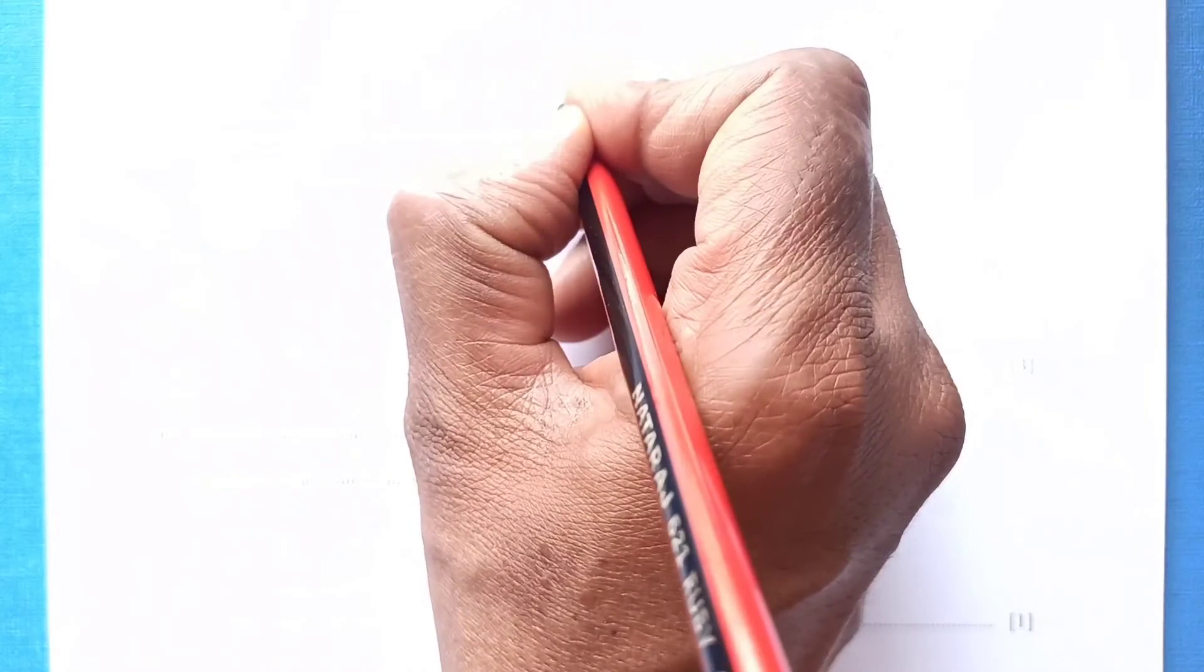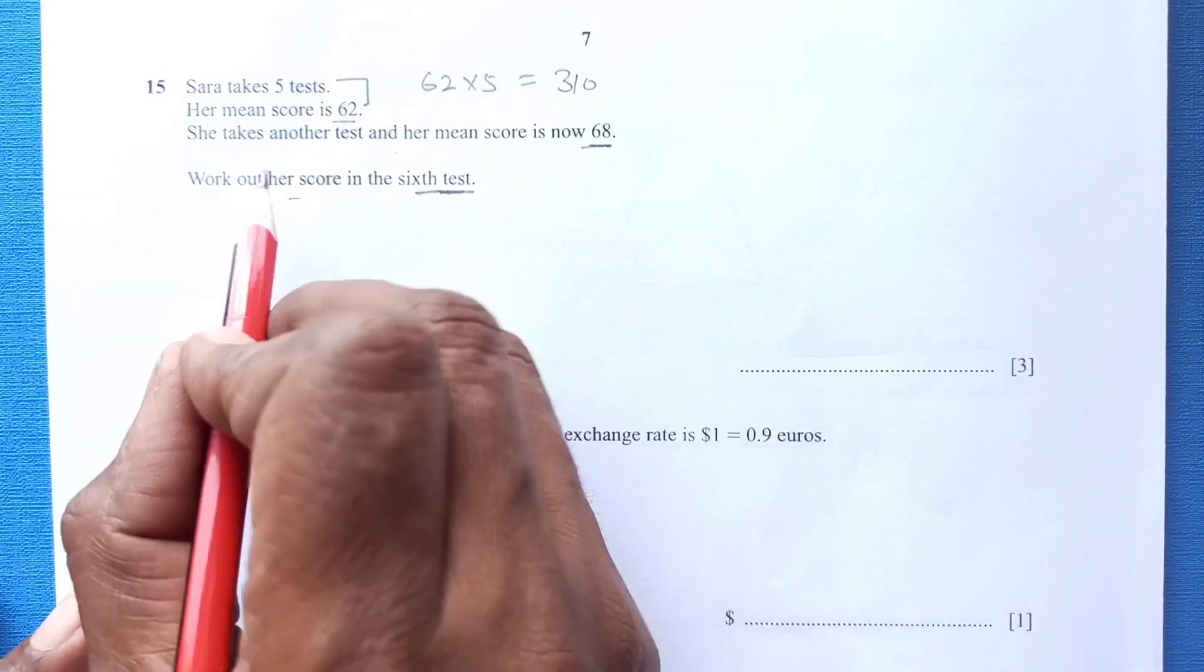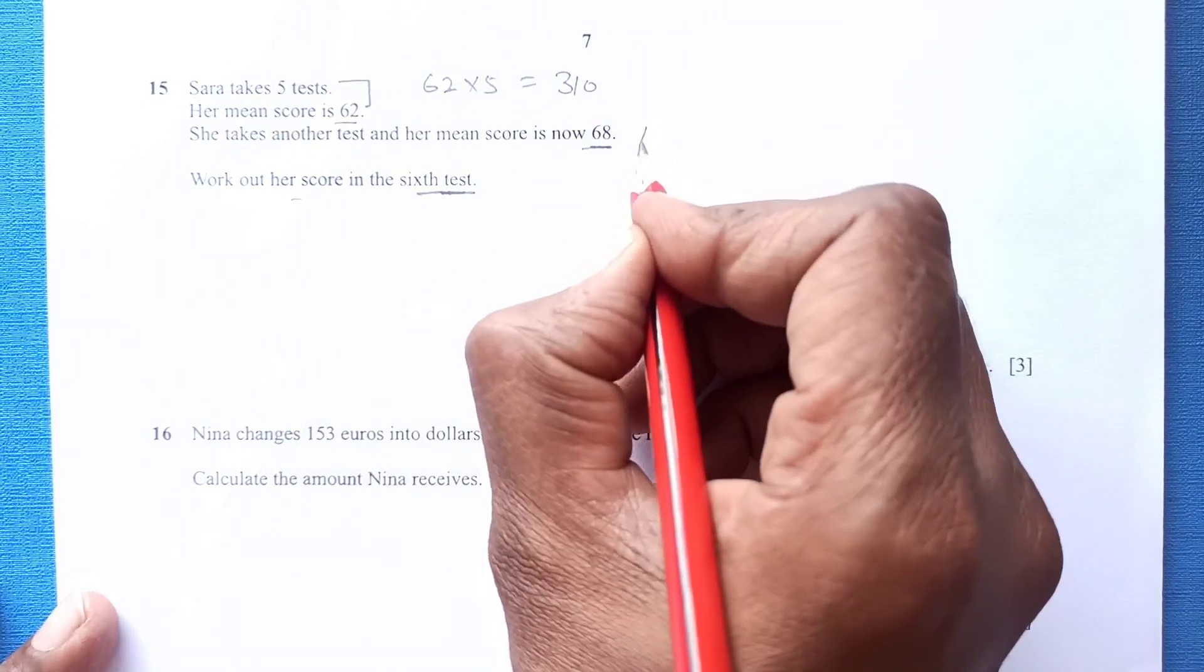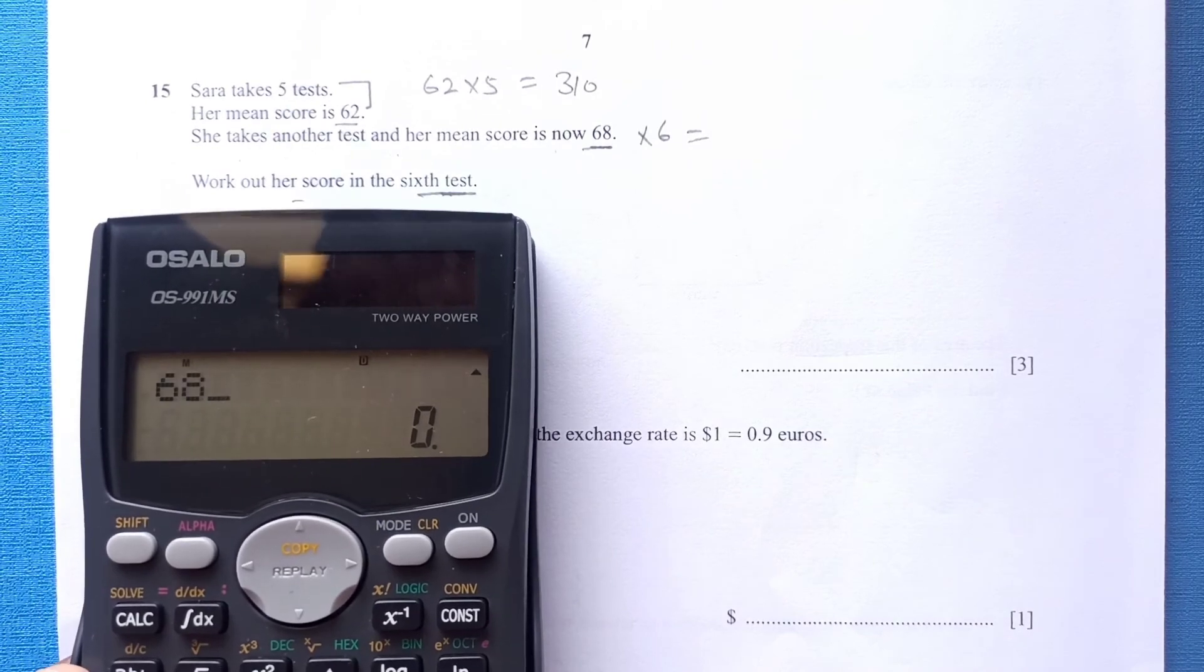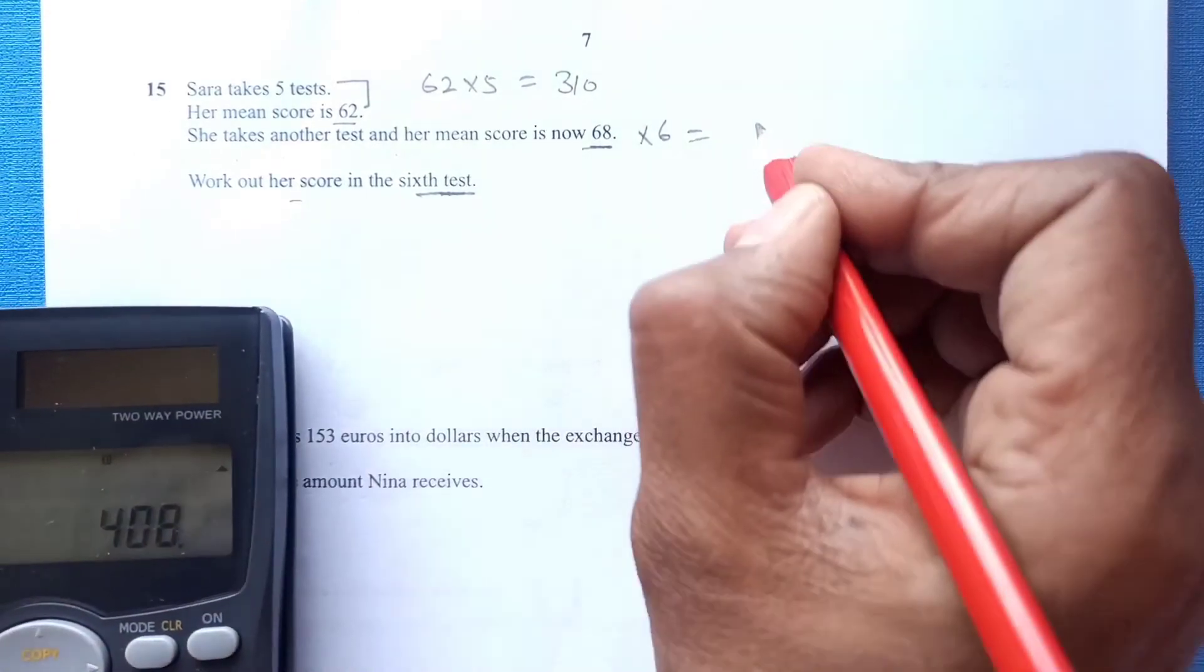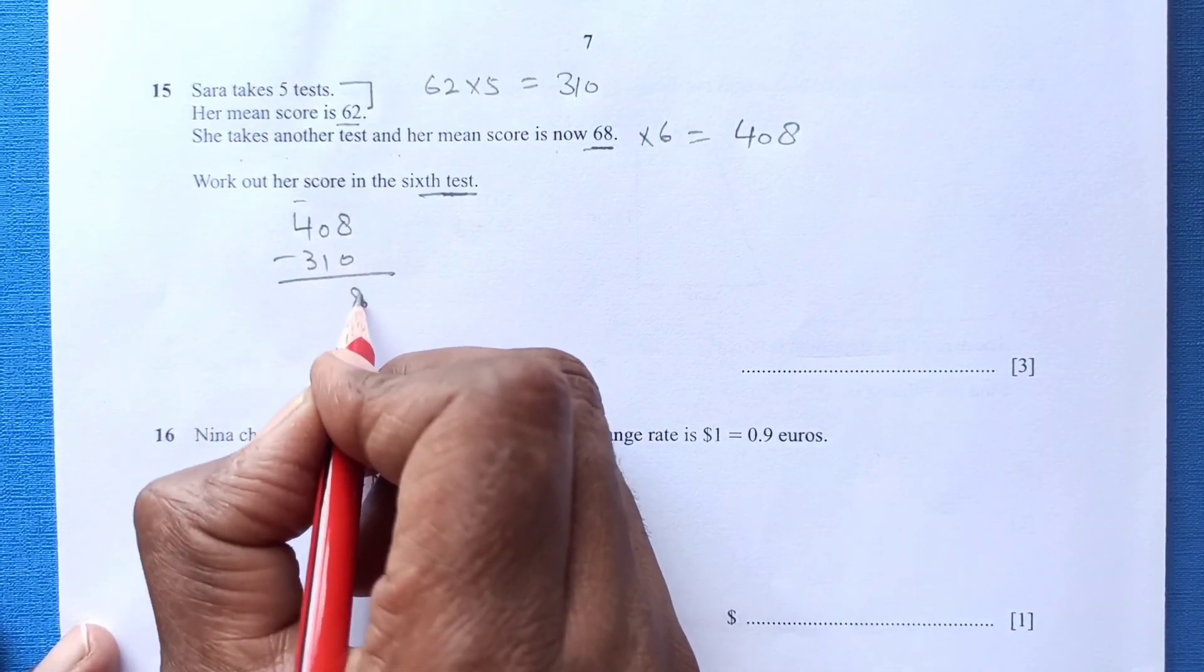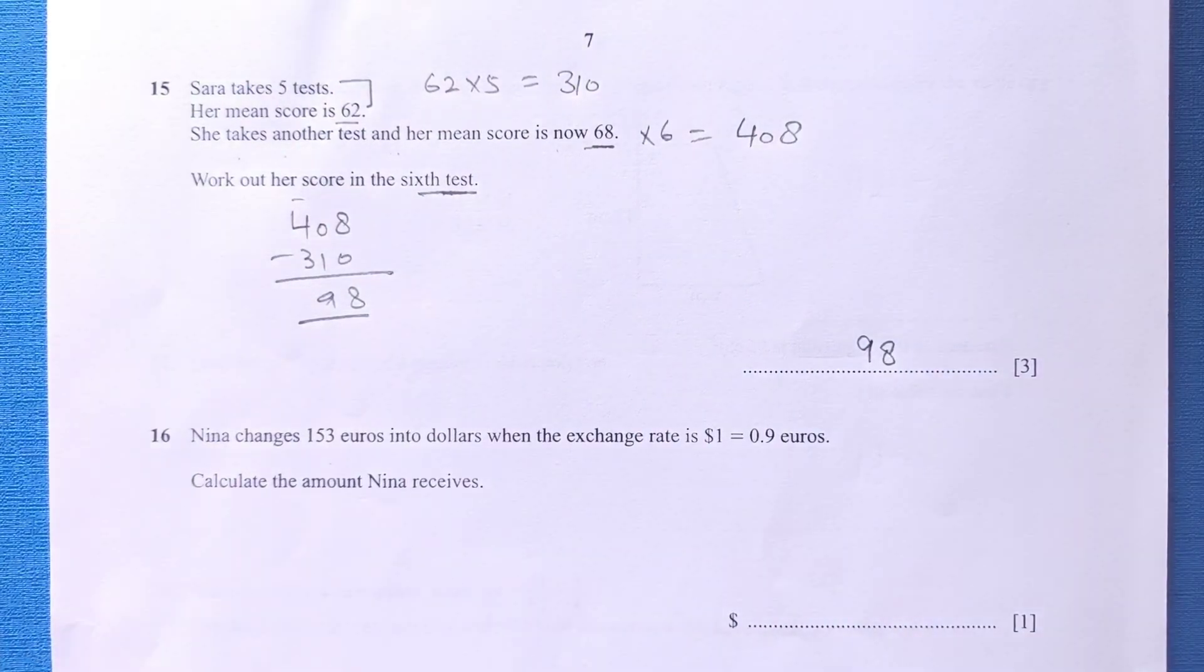Number 15: This is the score of her first 5 tests. She takes another test. Now the score is 68. 68 times 6, this is the score of the 6 tests, all the 6 tests. This is 408. The 6th test, that means 408 minus 310. This is going to be 98. Final answer will be 98.